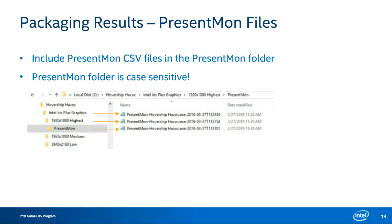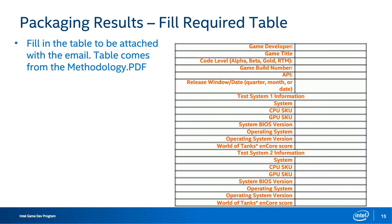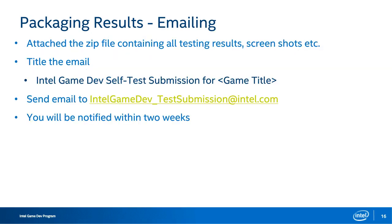This table is provided in the methodology doc. We need to know the specs and setup of your system to properly understand your results. We realize some of this info is in the DX Diag file, but having it here is for quick reference and will be helpful in our review. Once you've created the zip file with the results, start an email with the title format shown, copy in the table, and attach the results. Once we've received the results, it takes approximately two weeks to review and get back to you. If you pass and are certified, we'll send you the usage guidelines for the 'Runs Great on Intel Graphics' text treatment, which you can use in all your digital and print media.